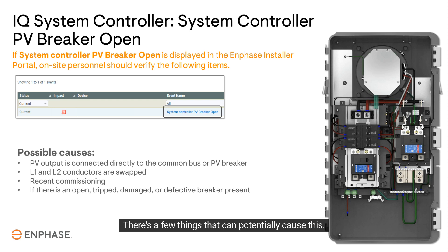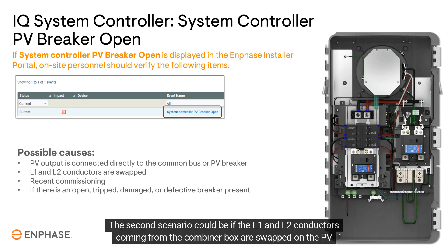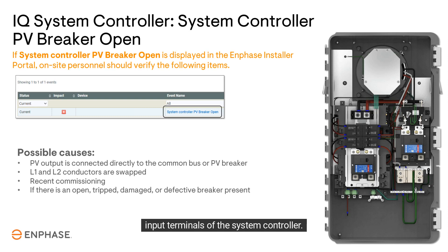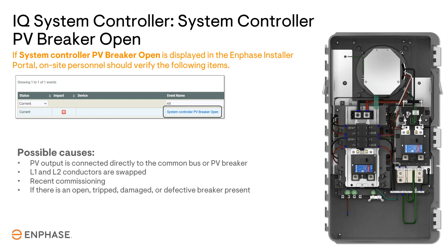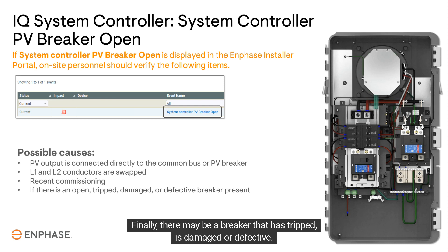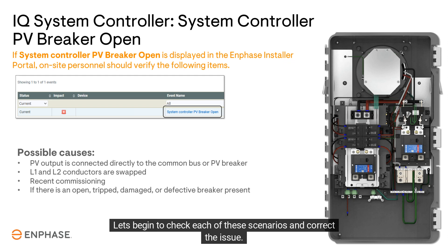There are a few things that can potentially cause this. The first is if the combiner box's output conductors are wired directly to the system controller's PV breaker on the bus bar. The second scenario could be if the L1 and L2 conductors coming from the combiner box are swapped on the PV input terminals of the system controller. The third scenario may be if the site was commissioned in the last two to three days, the PV breaker might be left open from commissioning. Finally, there may be a breaker that has tripped, is damaged, or defective.